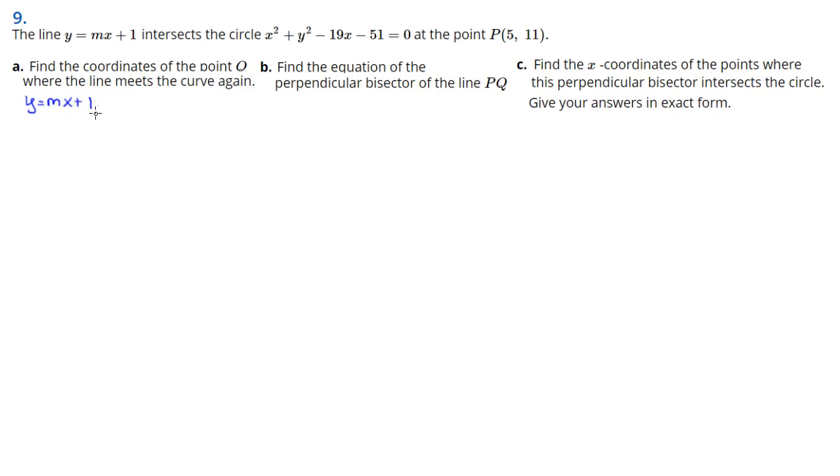The first thing is that we don't know what m is in the line, but they gave us a point. If I substitute in the x and y of the point, I can figure out what the slope is. Pretty quickly I can figure out that the slope equals 2. Now I've got an actual equation for the line: y equals 2x plus 1.